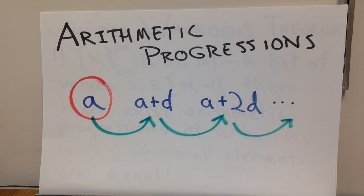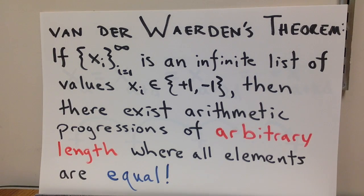Arithmetic progressions have been studied a lot, and here's one possible application. Maybe the most famous theorem about arithmetic progressions is called van der Waerden's theorem. And one version of it is saying, well, if I give an infinite list of values, x i, that are either plus one or minus one, then there exist arithmetic progressions of arbitrary length where all the elements are equal. This is a really, really cool theorem. This means that there's really, really long sequences that are these arithmetic progressions where I see the same value over and over again.